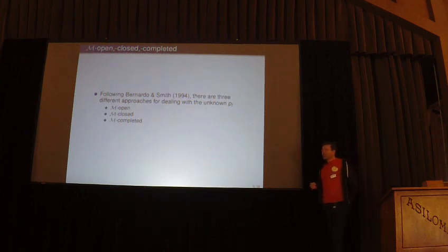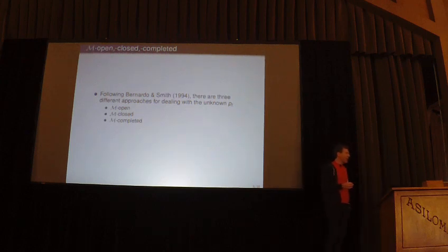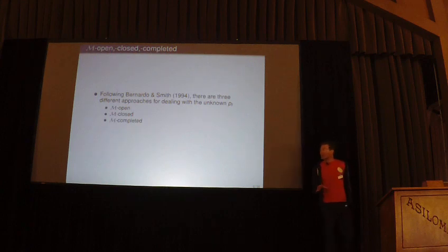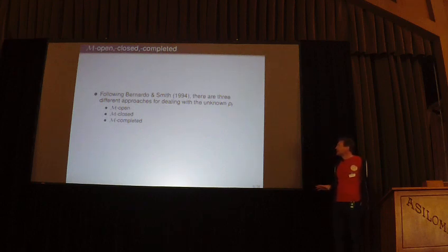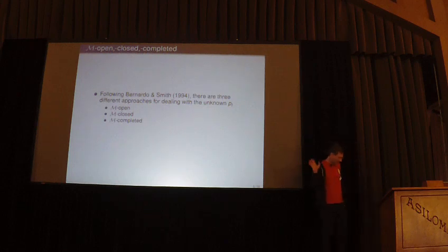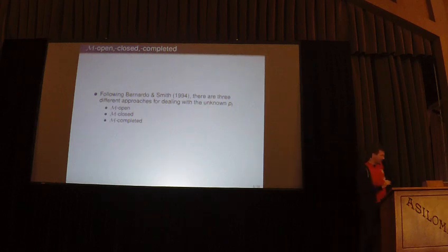Ideally we would know the future data distribution, average over it, and obtain the expected log predictive density as our measure of how good the predictive distribution is from model Mk. The problem is we don't know the future observations or the true future distribution. Following Bernardo and Smith, there are three approaches for dealing with this unknown p-tilde: M-open, M-closed, and M-completed. Today I talk about M-open and M-completed.